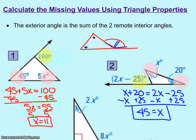I solved this equation by taking the x from the left and moving it to the right by subtracting, and at the same time taking the 25 from the right and moving it to the left by adding it there. Solving that equation, I got 45.